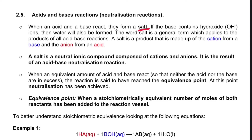When you have an acid and a base, one of the products is salt. When an equivalent amount of acid and base react so that neither the acid nor the base is in excess, the reaction is said to have reached the equivalence point. At this point, neutralization has been achieved — equal amounts of acid and base react completely with no excess remaining.